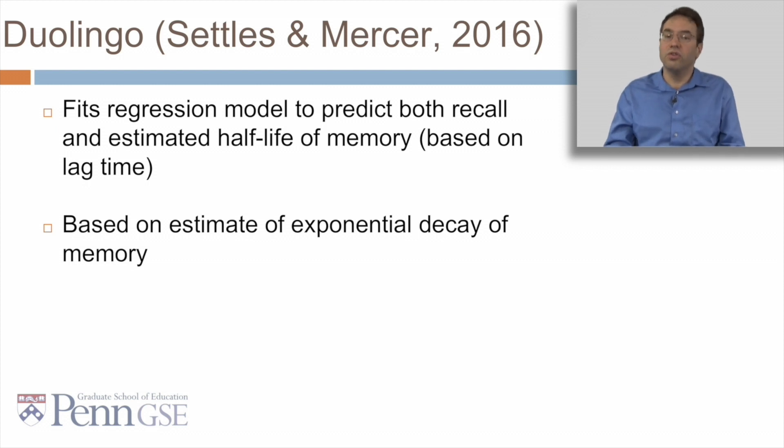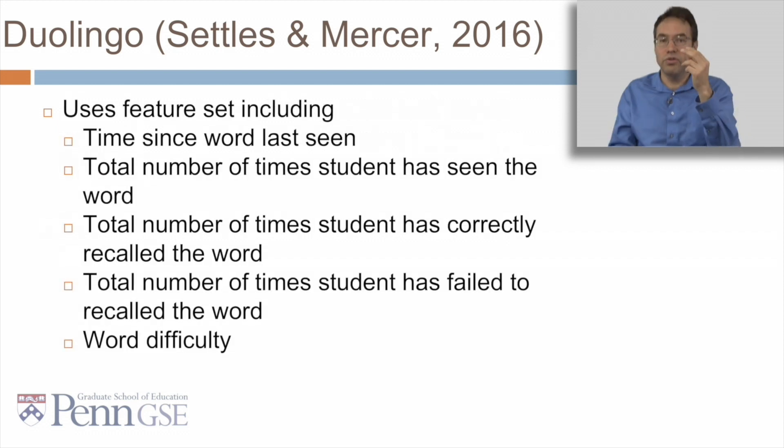Also very recently, Duolingo, you've probably heard of it, like six million people have used it to learn a language, fits a regression model to predict both the recall and the estimated half-life of memory based on the lag time. It's based on an estimate of the exponential decay of memory. But Duolingo does this calculation not based on the kind of complex algorithms that are recursive or iterative in nature, like seen in Pavlik or Moser, but instead uses a feature set including the time since the word last seen, total number of times the students seen the word, total number of times the students correctly recalled the word or failed to recall the word, and the word difficulty. So it tries to capture some of the same idea as Dash in a formulation that is quicker to implement, quicker to run in real time.